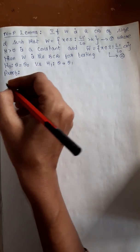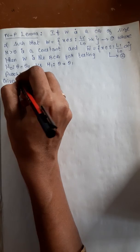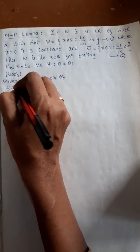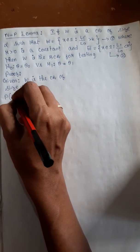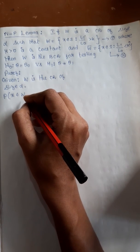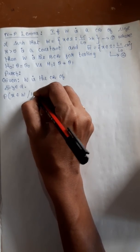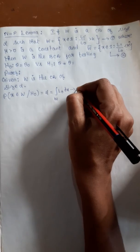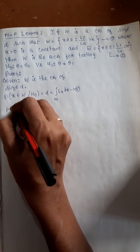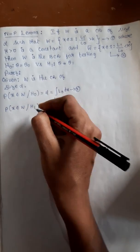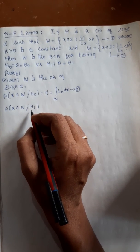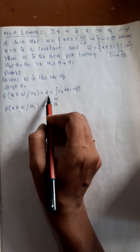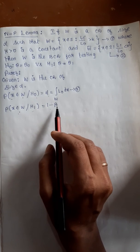Now let us start the proof. What is given? It is given that w is the critical region of size alpha. We know that the probability of rejecting H0 — that is, x belongs to the critical region when H0 is true — is alpha. The probability of rejecting H0 when H1 is true, that is when H0 is false, is the correct decision. We call it the power of the test: 1 minus beta.